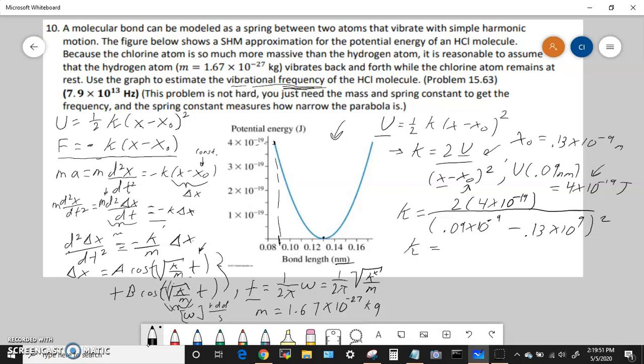Then we can plug in everything for f. So the frequency is going to be 1/(2π) times the square root of 500 divided by 1.67×10^-27 kilograms, and then the spring constant is 500. Then we square root the whole thing and divide by 2π, so we get that the frequency is 8.7×10^13 hertz.